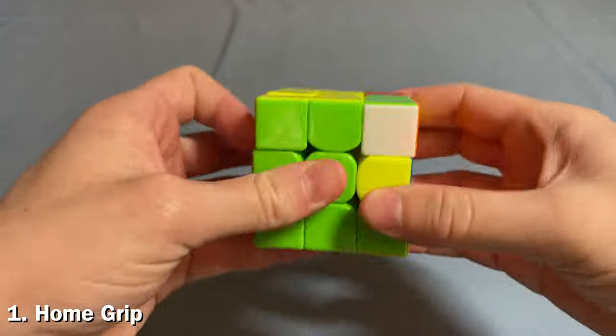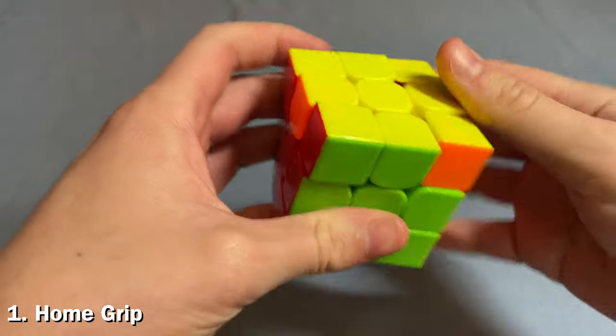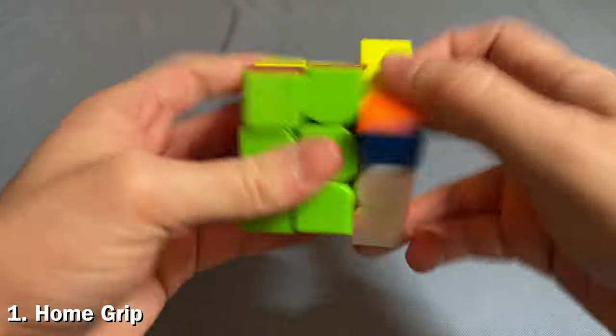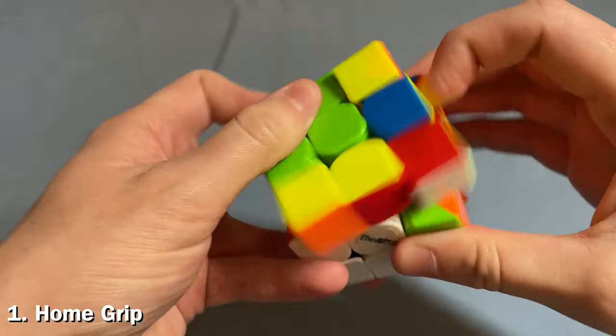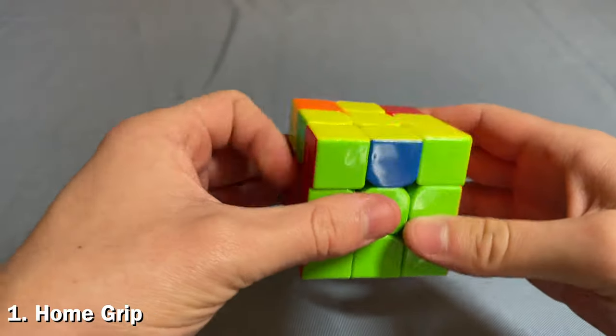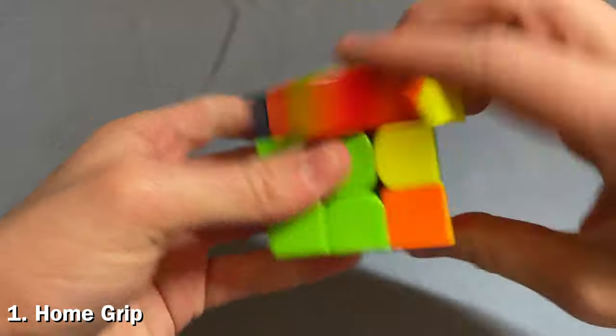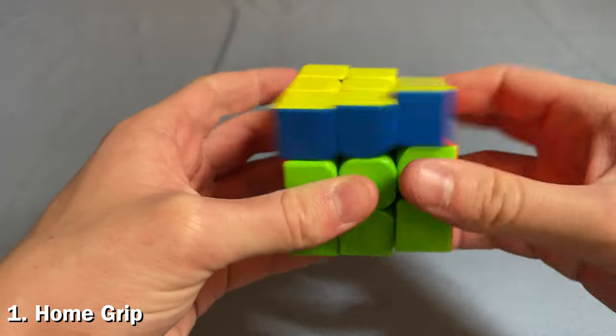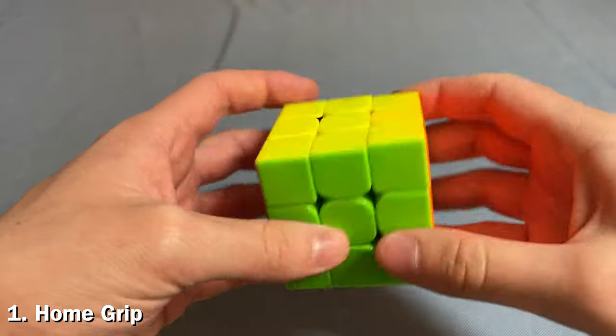We're going to start with this. This is called home grip and you can see it's just what I normally use when doing algs and stuff. This should be the most natural grip for you - holding the cube with your hands, one on the front, one on the back. Any time you're doing any kind of algorithm or F2L move, your hands should naturally come back to this position.